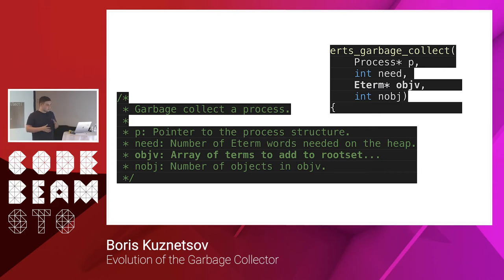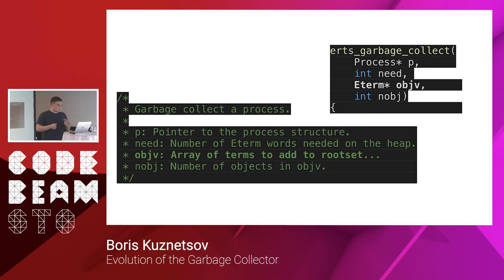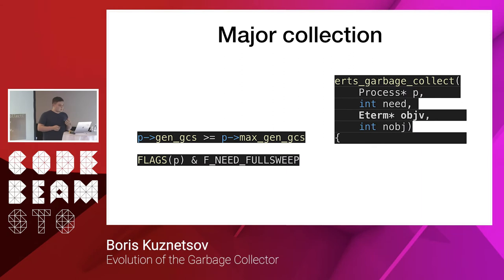Let's go deeper and look at exactly how the garbage collect method works. When we call the garbage collect method we pass several arguments: the process control block, the space we need on the heap of that process, and two additional arguments — the root objects which can store objects on the heap of the process. The garbage collect method needs to decide which way to go. Erlang has different garbage collection algorithms and for the main process heap we use a generational garbage collector.